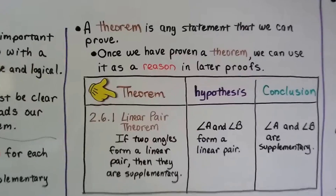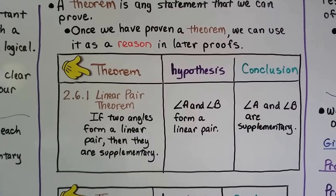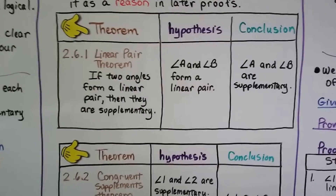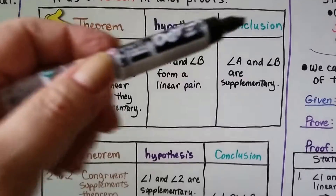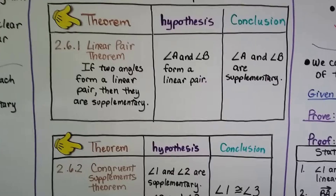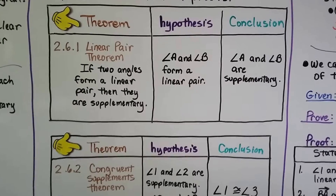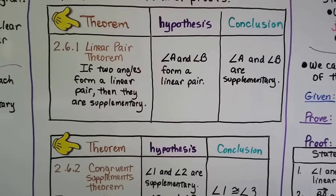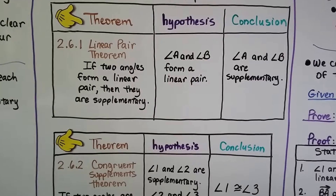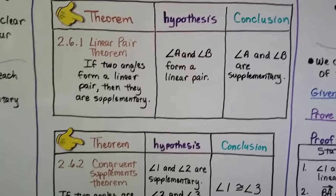A theorem is any statement that we can prove. And once we have proven a theorem, we can use it as a reason in later proofs. You should write this down. We have Theorem 2.6.1, which means Chapter 2, Lesson 6, our first theorem — it's the Linear Pair Theorem. It says if two angles form a linear pair, then they're supplementary. Our hypothesis is angle A and angle B form a linear pair, so our conclusion is that angle A and angle B are supplementary.